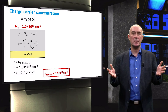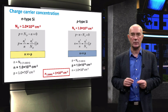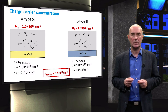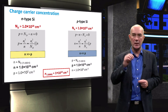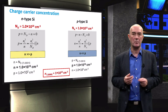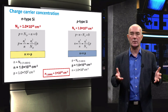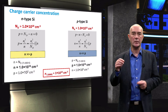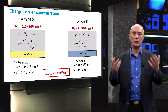We can do the same calculation for a P-type semiconductor with a given acceptor concentration. The key difference now is that we set P equal to the acceptor concentration and solve for N through the mass action law. This is because at room temperature all boron atoms are ionized and each boron atom contributes one hole.